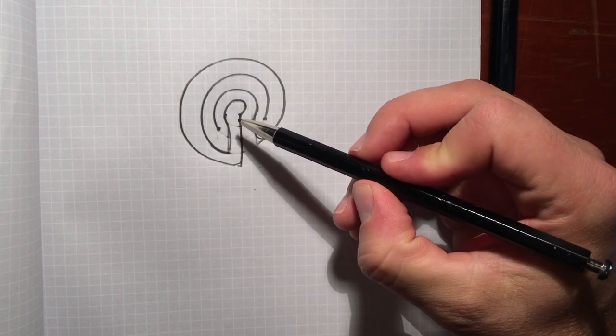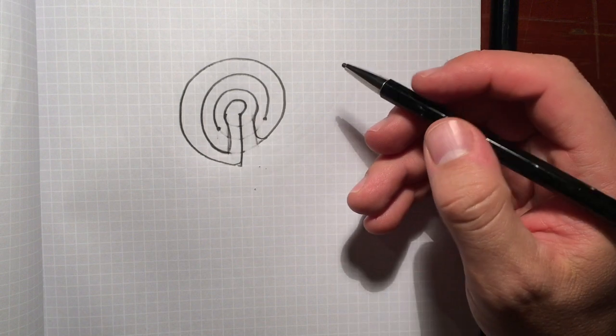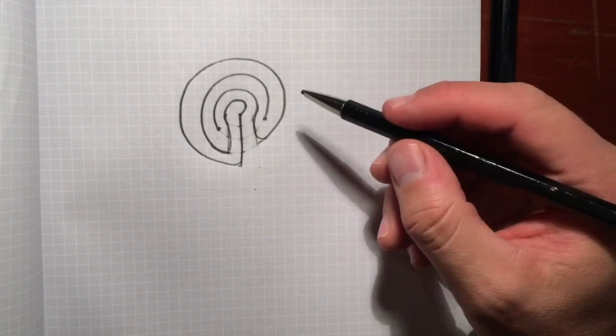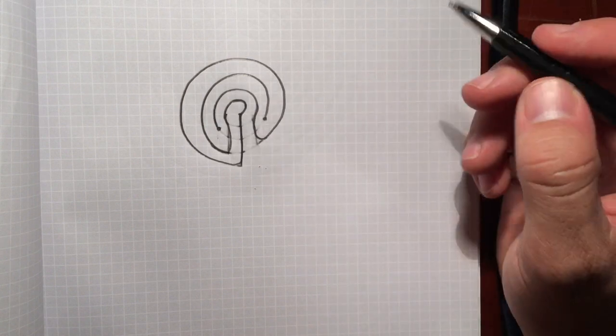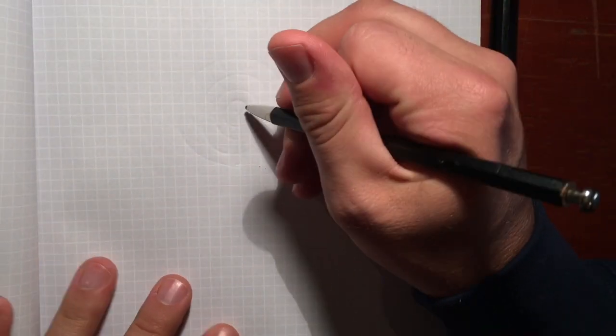And there is our three-circuit Classical Labyrinth from a spiral. Now you can see that this center gets a little off.